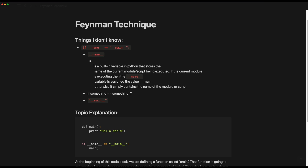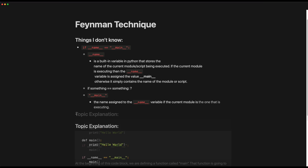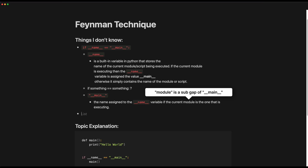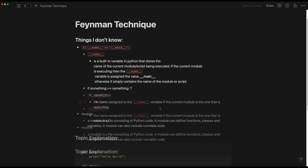Now this can go one of two ways. You'll either be able to write out a complete explanation of each thing you don't know, or you'll find yourself in another instance where you again find sub-gaps in your understanding of the parent gaps. Parent gaps are the original gaps, and sub-gaps are children of those original gaps — essentially, you find more gaps when trying to explain one of the initial gaps. In that case, add those sub-gaps to the same list and repeat the process until you can clearly write out an explanation for every point in your 'Things I Don't Know' list.